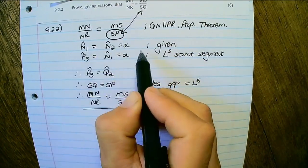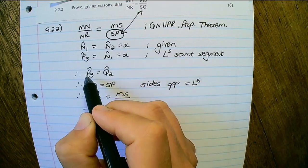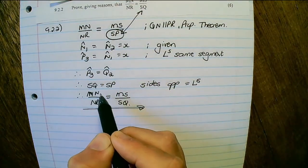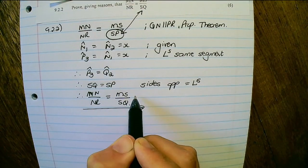So we used the proportionality theorem to set up this equation and we only needed to prove that SP is equal to SQ. So from here I went on to prove angles opposite equal sides. And that allows me to conclude that SQ is equal to SP and therefore this statement is true.